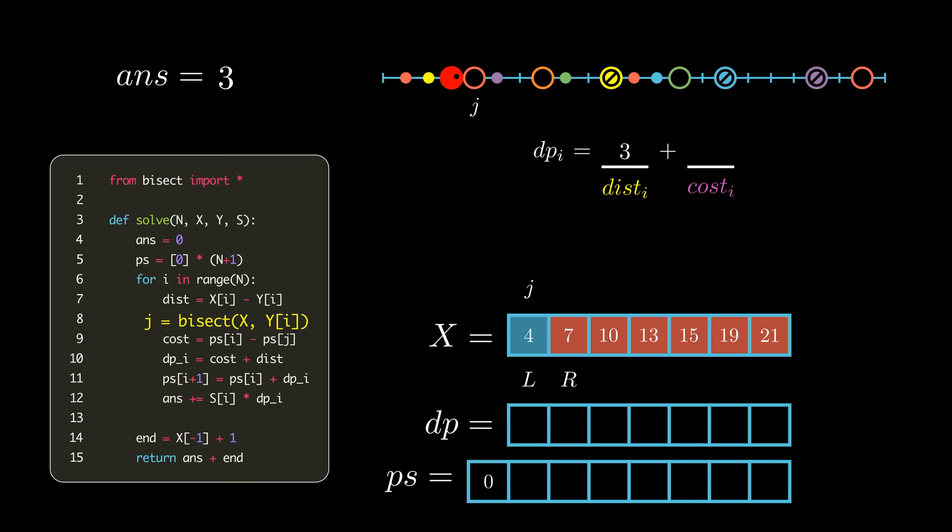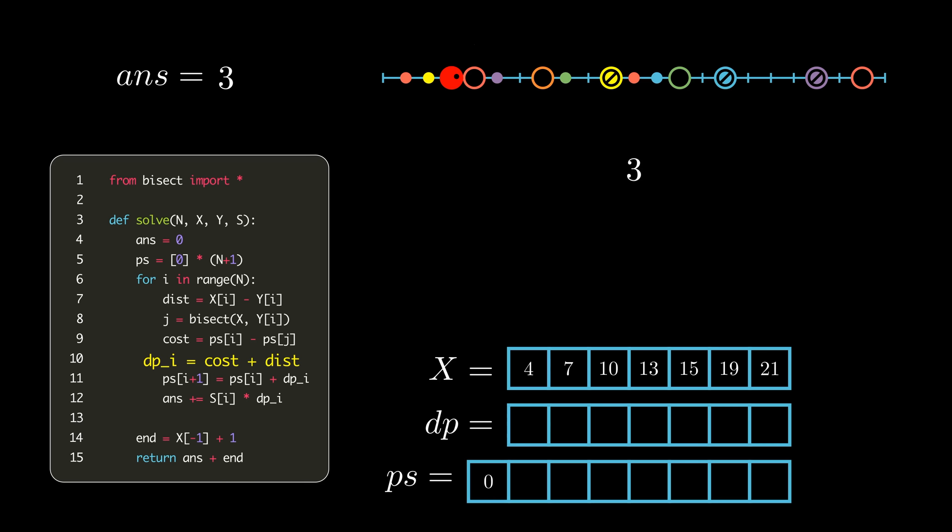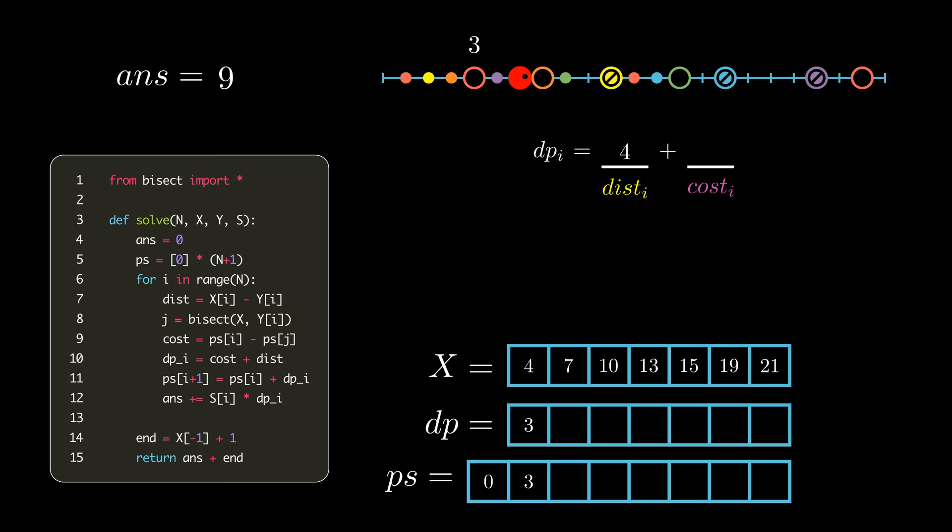Then, using prefix sums, we can find the sum of all the DP values in that range in O of 1. This yields a total time complexity of O of n log n, which is absolutely fast enough to pass the constraints, and is a pretty natural extension of the O of n squared solution.